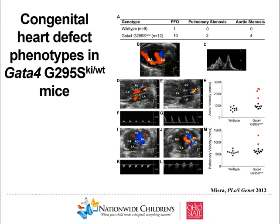We were able to generate a mouse model that recapitulated the disease seen in human patients. On ultrasound, you can see communications between the upper chambers of the heart, similar to what we saw in our family members. A subset of the family also had valve stenosis of the outflow tracts, and we were able to see that in the mouse too. On echocardiogram, normally you see nice laminar flow from the left ventricle to the aorta and pulmonary artery, but we see increased velocity corresponding to narrowing, quantified in a subset of mice. We are now using this as a model to study the development of heart valve disease.